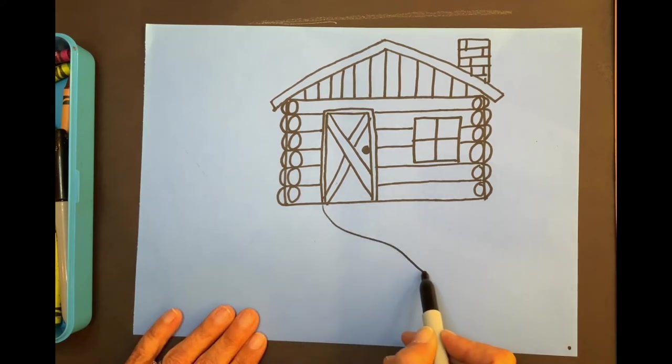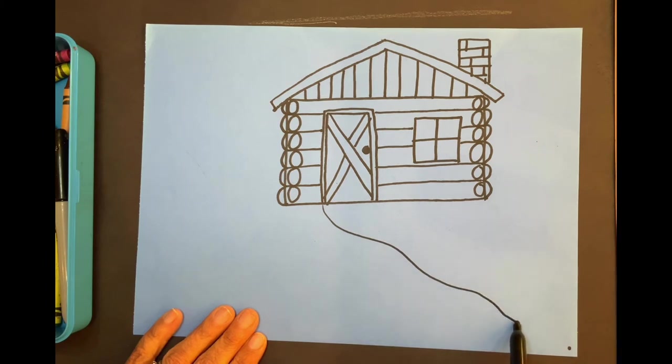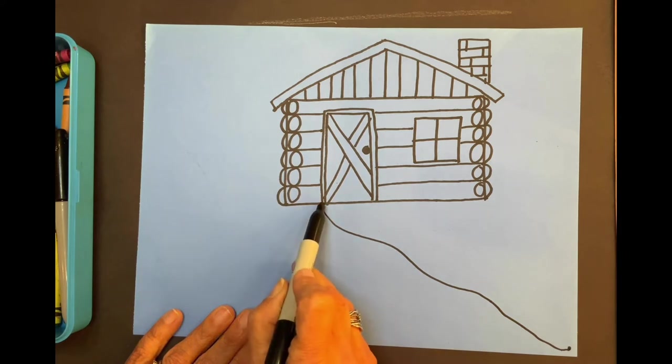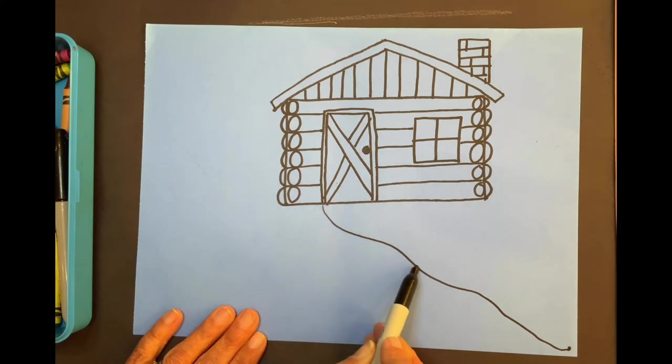Mine can be a little wavy, not too much, and then I go all the way to this dot. So make a dot first, and then from the door, a little bit wavy, all the way to the dot.